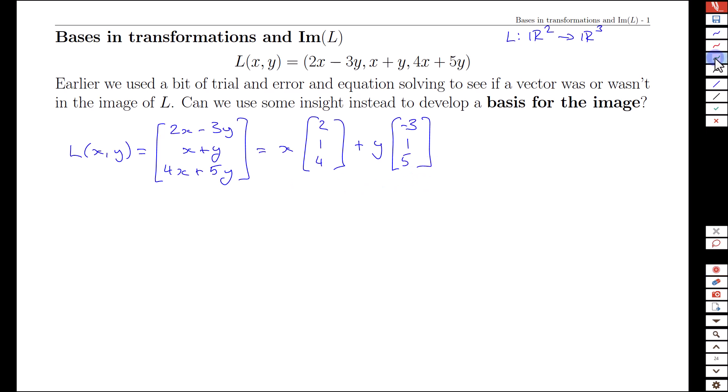Our question about the image is: what elements of R³ can be made by L by choosing different (x, y) input values?